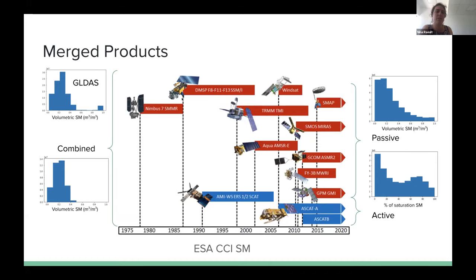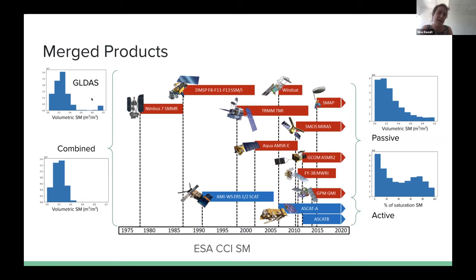To do this, ESA CCI uses an intermediate land surface model called GLDAS. Using CDF matching, it takes the dynamic range of GLDAS to merge all the products together. When we look at the combined product, we see that its histogram looks a lot more like GLDAS than the other two. This is something we have to be cautious with, because the GLDAS has imposed its dynamic range on the combined product. We can't really trust it — are we comparing to the GLDAS model or to the actual sensors? ESA CCI is trying to move away from this by using SMAP and SMOS to do the merge, but they're not there yet.